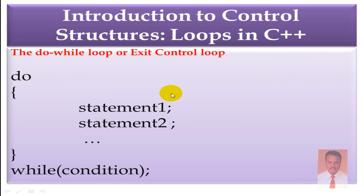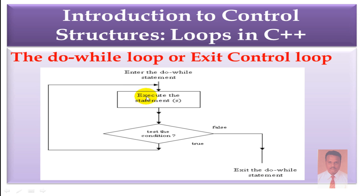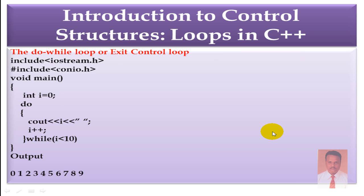We will see the syntax for do while: do { statements } while ( condition );. Now for the flow control: enter the do while statement, first execute the statement, then test the condition. If the condition is satisfied, it goes back for execution again. If the condition fails, it exits the do while statement.